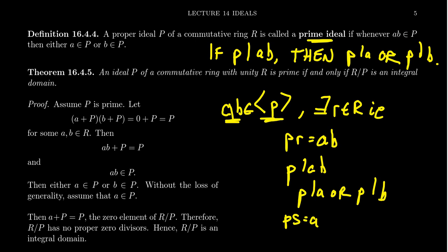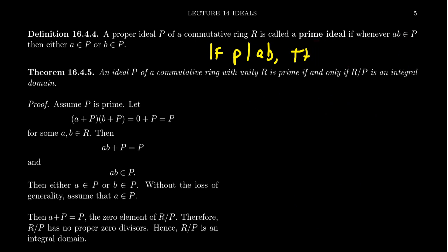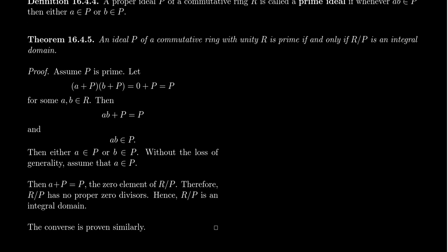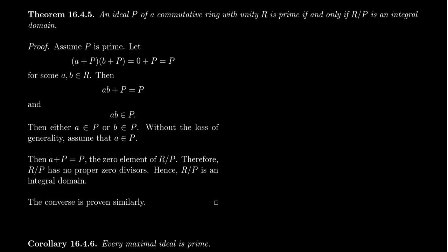And so it turns out that similar to what we talked about previously with maximal ideals, an ideal of a commutative ring with unity R is a prime ideal, if and only if R mod P is an integral domain. So remember, an integral domain would be a commutative ring with unity with no proper divisors of zero. Or you could also say it satisfies the cancellation property. And so modding out by a prime ideal forms you an integral domain and vice versa. That is, if your quotient is an integral domain, you modded out by a prime ideal.